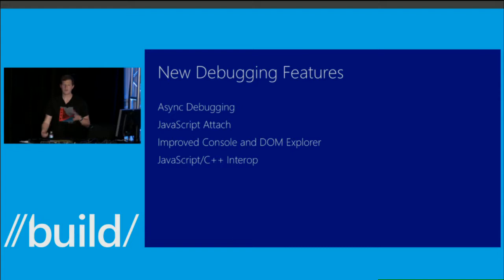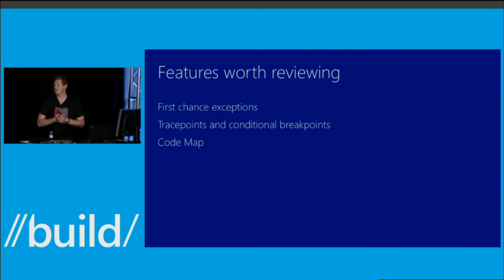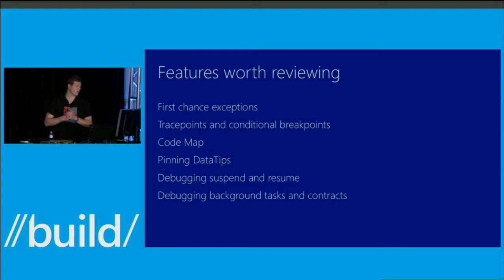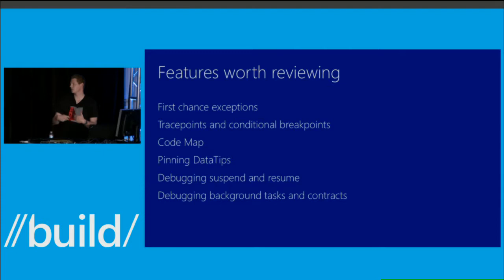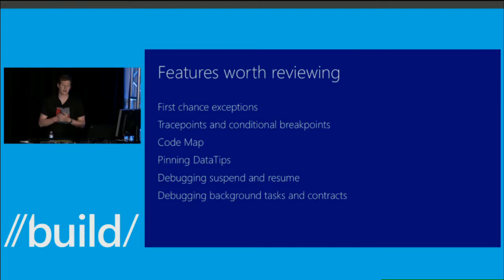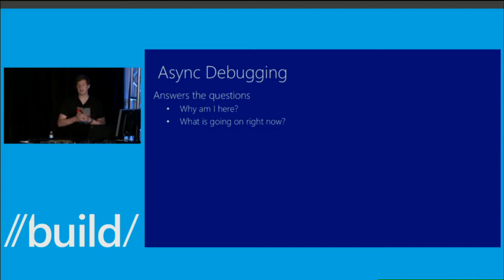Before I get started: how many people here are developing Windows Store applications? A fair number. How many people do primarily web development in Internet Explorer? So it looks like we have mostly people developing store apps. Some of the features worth reviewing — some have been in for a while, some added more recently: first chance exceptions, where the debugger will break when an exception is thrown regardless of whether you're going to handle it or not. Trace points and conditional breakpoints. A feature called code map. Pinning data tips — how you can keep them around in your editor. How to debug suspend and resume in Windows Store applications. And how to debug background tasks and contracts — code paths you can't necessarily invoke via normal use of the application.